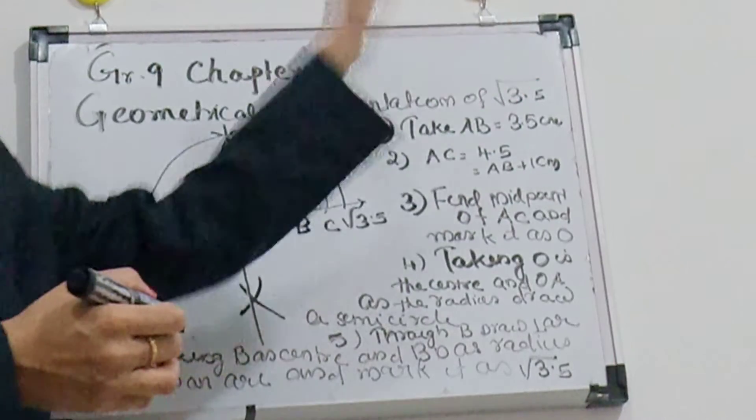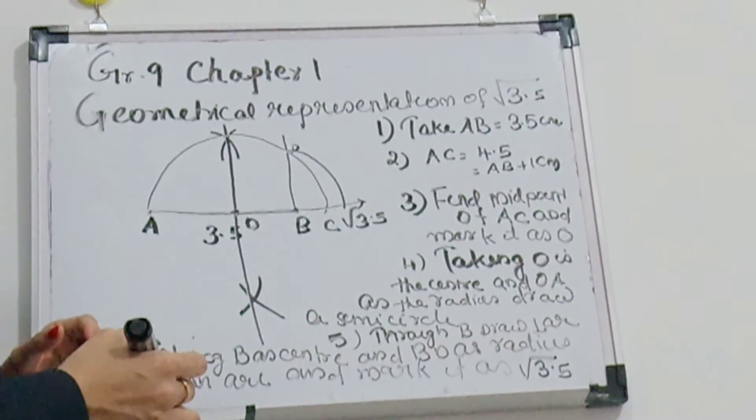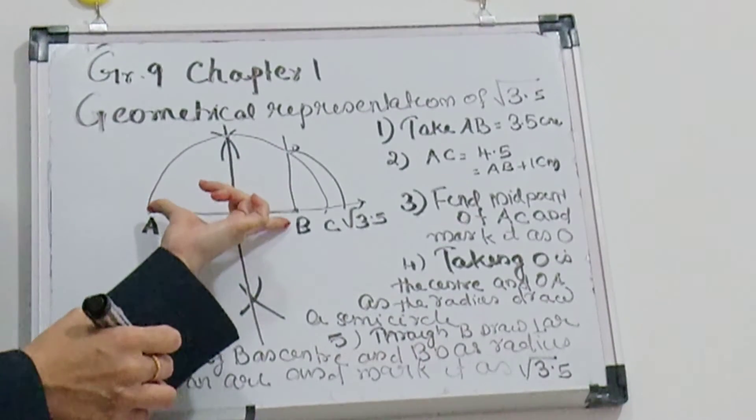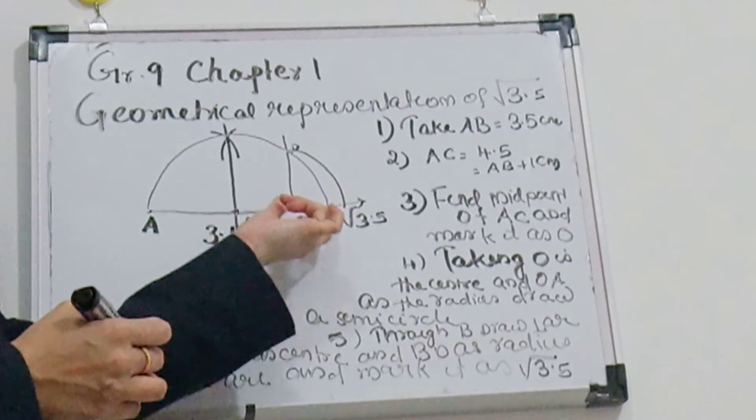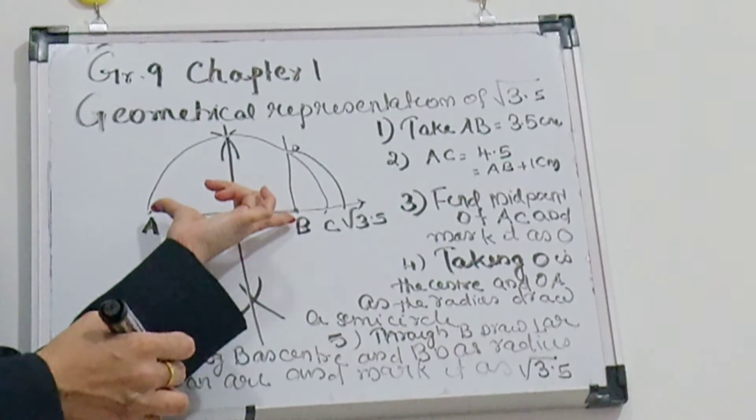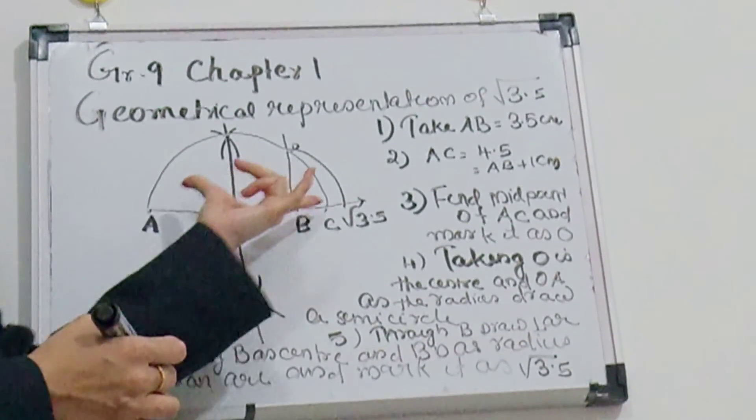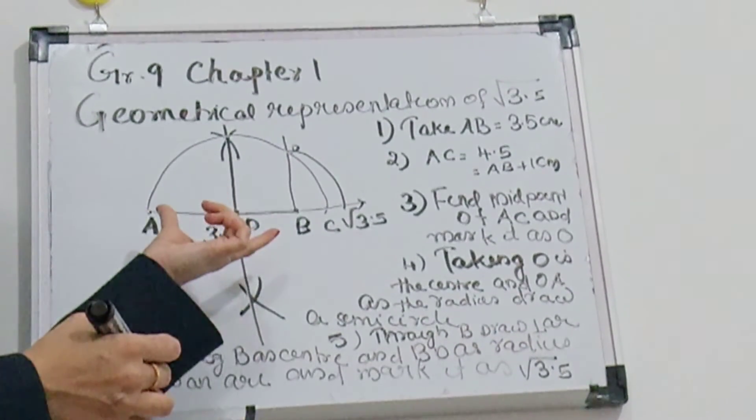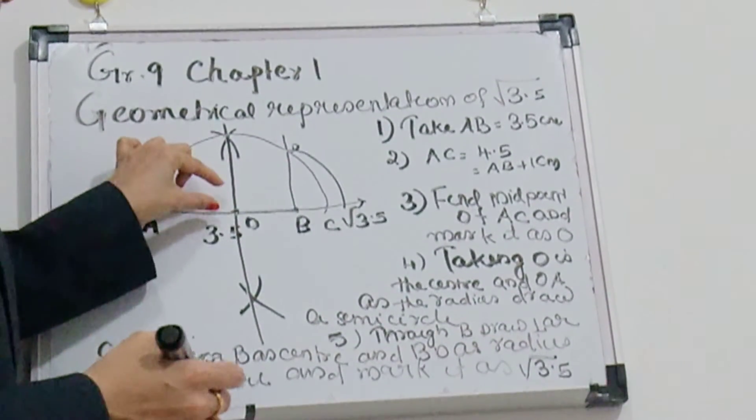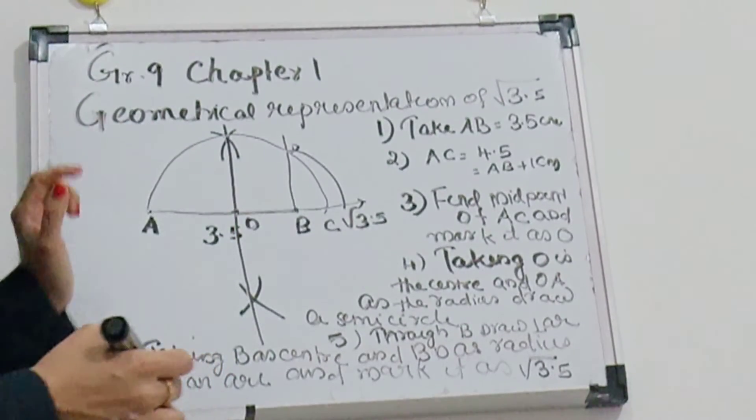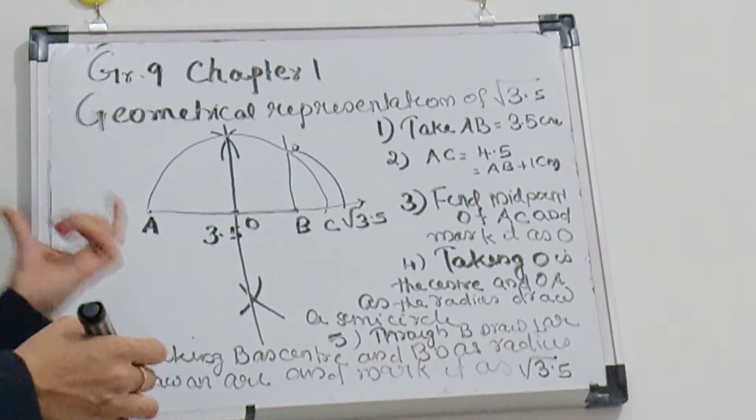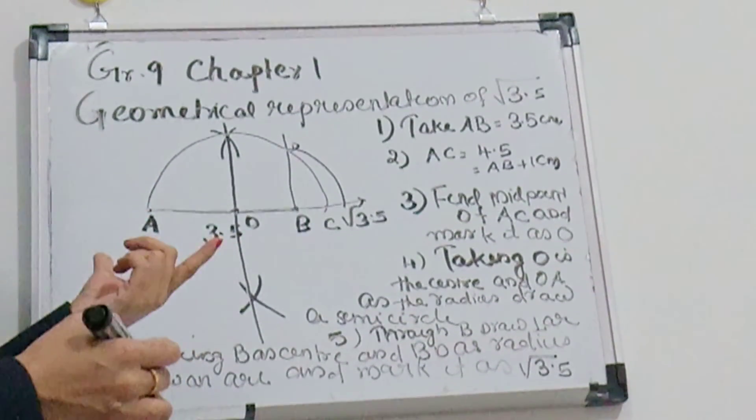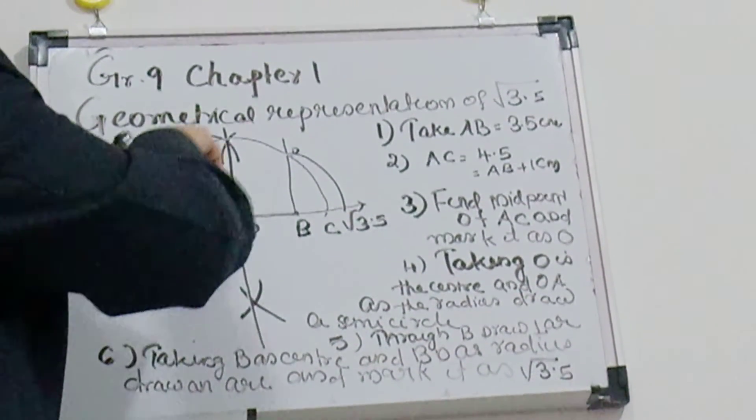The question is draw root of 3.5. So first you use the scale to draw 3.5 centimeter and extend one more centimeter. This you mark as AB and this is AC. Now you find the midpoint of AC, then mark it as O. Keeping O as the center and either OA or OC as radius, you draw a semicircle.